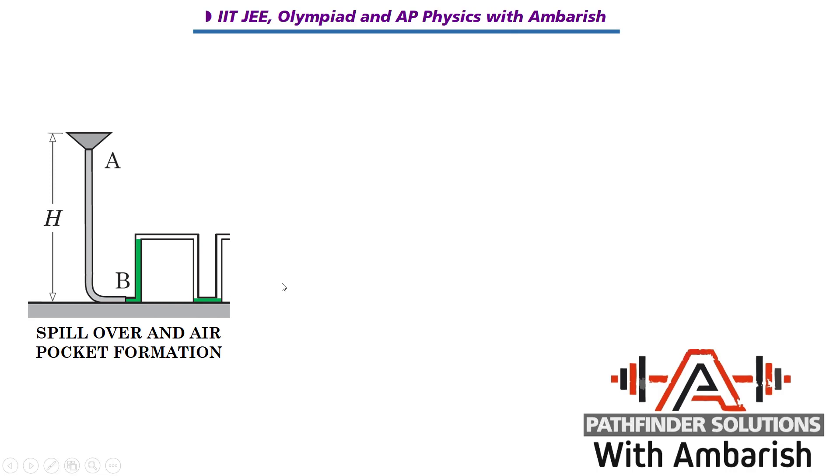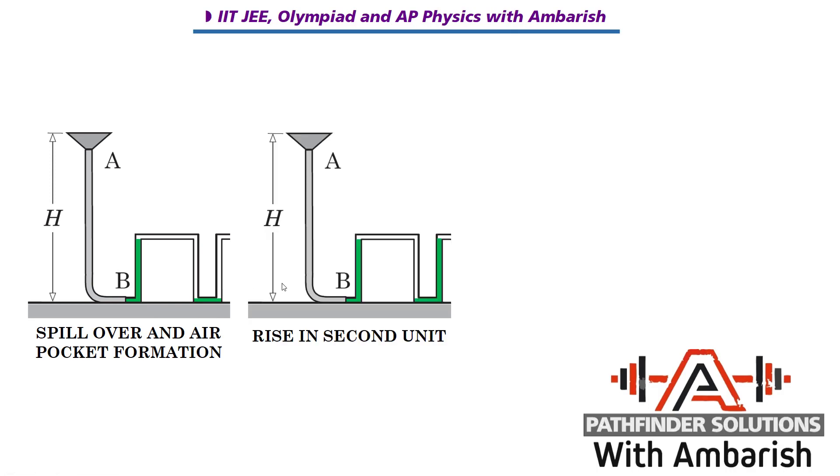Now what will happen after this? If you still keep on pouring more and more water, then water keeps on spilling over from here and it will start rising on the second unit. So it will start rising in the second unit. Then again once the second unit is filled all the way up to the top, again there will be spill over.